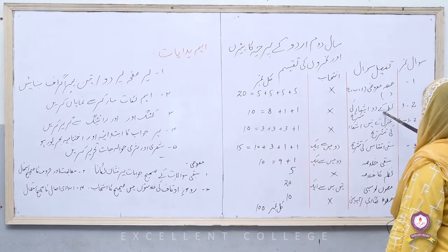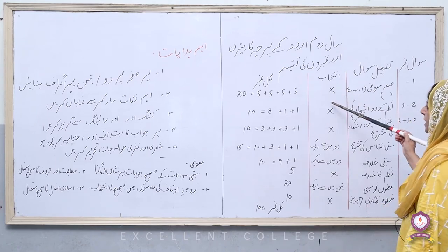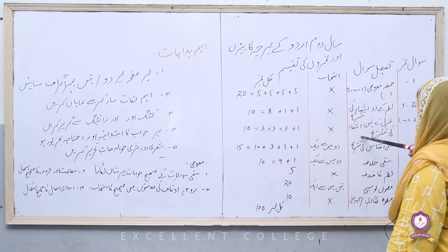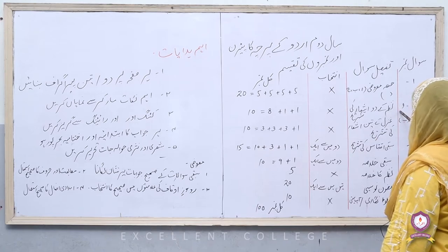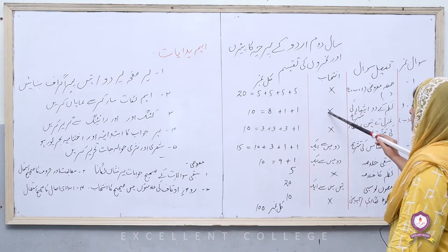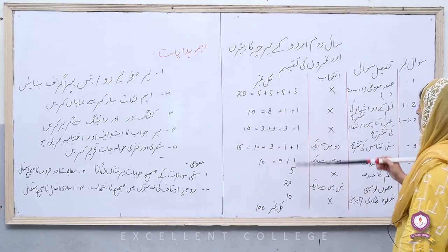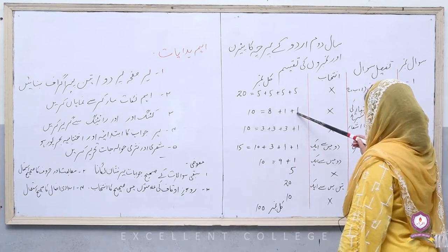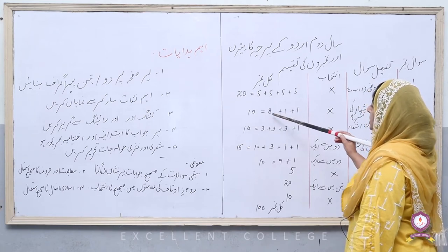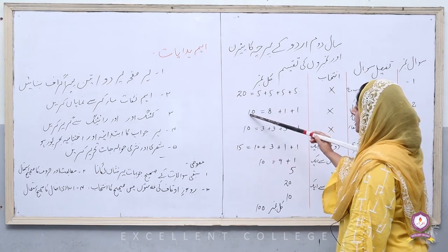نمبر دو پہ نظم کے بارے میں بتاتی ہوں۔ معروضی پیپر کے بعد انشائی پیپر ہوتا ہے جس کے دو حصے ہیں: ایک شعری حصہ اور دوسرا نثری حصہ۔ شعری حصے میں سوال نمبر دو ہے — نظم کے دو اشعار کی تشریح۔ اس میں کوئی چائس نہیں، دونوں اشعار کی تشریح کرنی ہوگی۔ نظم کا عنوان، شاعر کا نام لکھیں گے، پھر چار چار نمبر کے دو اشعار ہوں گے — ٹوٹل دس نمبر۔